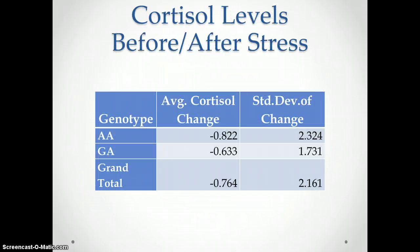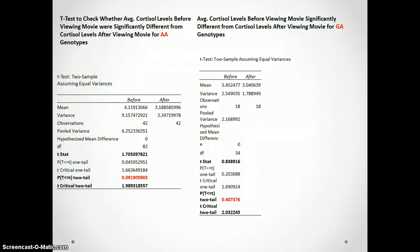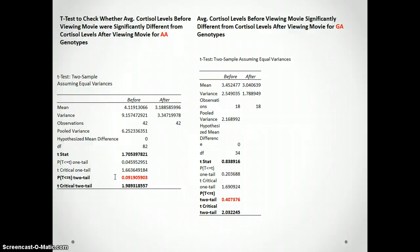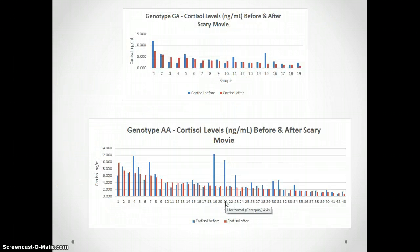These are the cortisol levels before and after stress. I did a T-test to check whether there was a significant difference between the cortisol levels before and after the stressor. For the AA genotype, there was no significant difference because the p-value was not below 0.05. Same goes for the GA genotype — the p-value was not below 0.05, so there was no significant difference. Here are graphs showing those results.